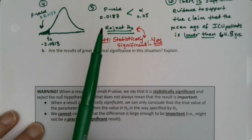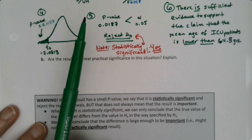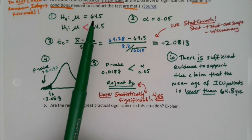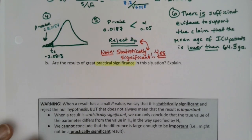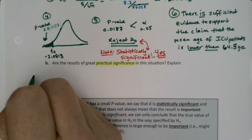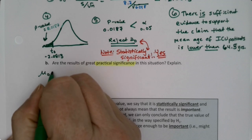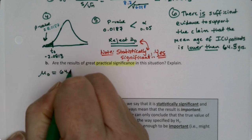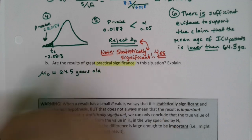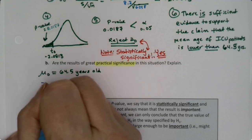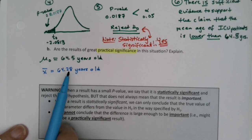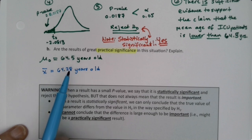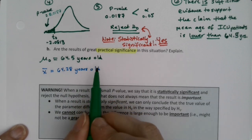We've proven that there is a statistically significant difference in the age of ICU patients — in 2000 it was 64.5 years, and now we're saying it's a little bit lower than that. But are those results practically significant? Do they have real value in real life? Let's look at it. Our initial hypothesis was that mu-zero was 64.5 years old, and now we have an X-bar that is 64.28 years old. Even though that's a statistically significant difference, it's not a very big difference — it's not going to affect how this ICU is run. So we're getting at something called effect size.